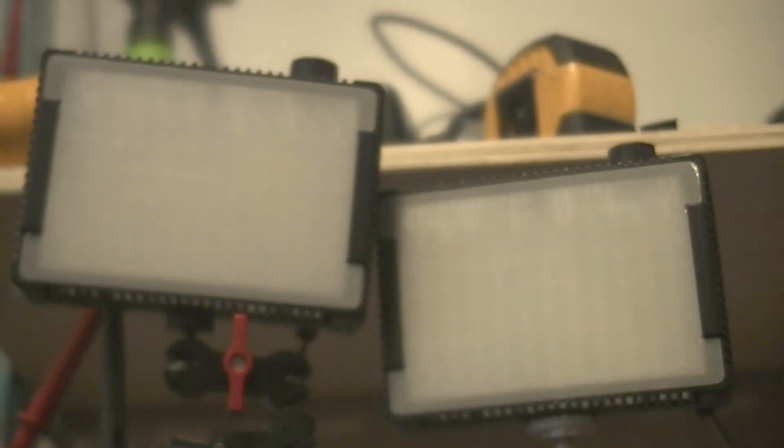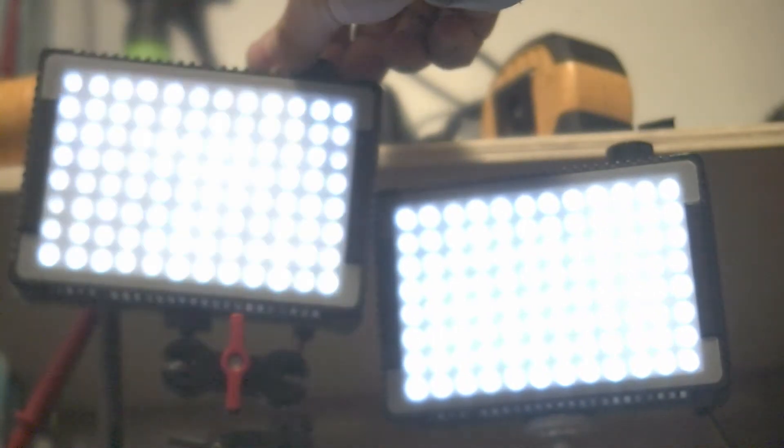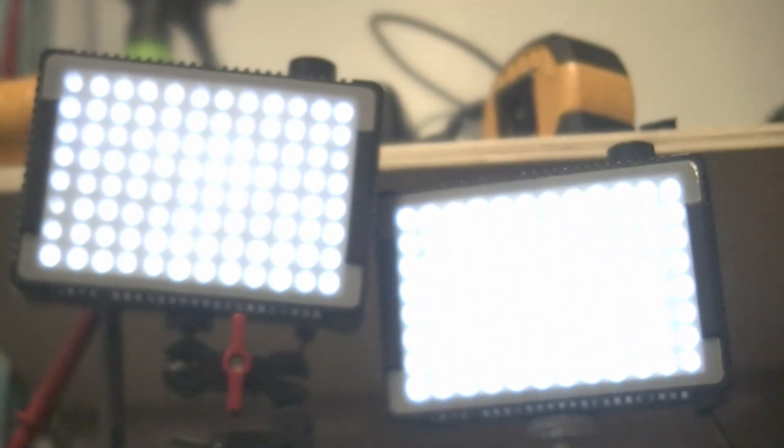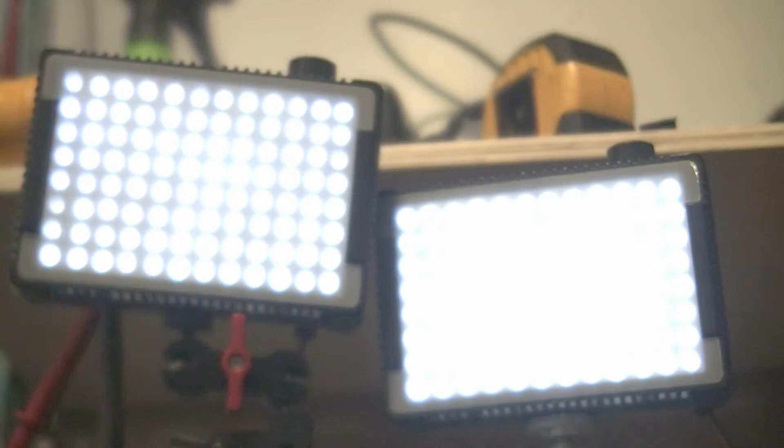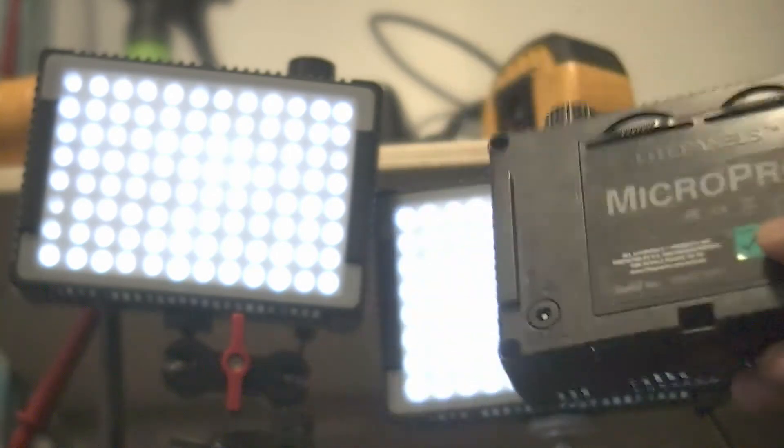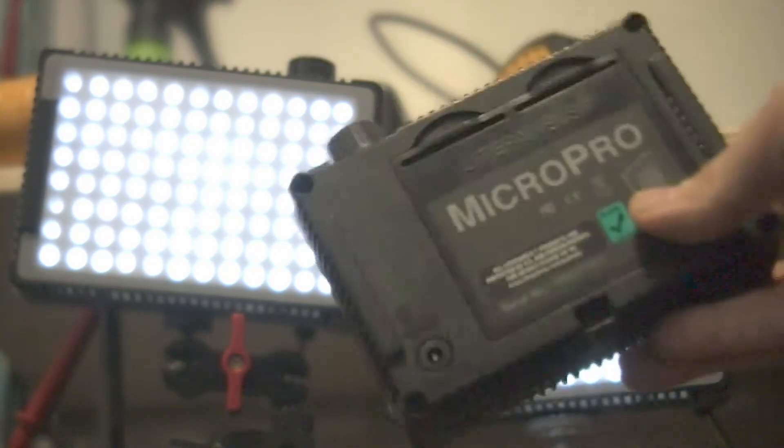So it's all wired up now, as you can see it's working well. The brand of these lights is called Micro Pro by Light Panels. Manfrotto bought the company, so now they're made by Manfrotto.